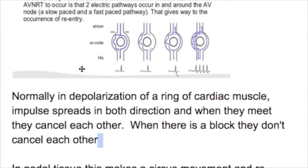What happens normally in depolarization of a ring of cardiac muscle? Impulses spread in both directions, and when they meet, they cancel each other. But when there is a block, they don't cancel each other, causing arrhythmia.